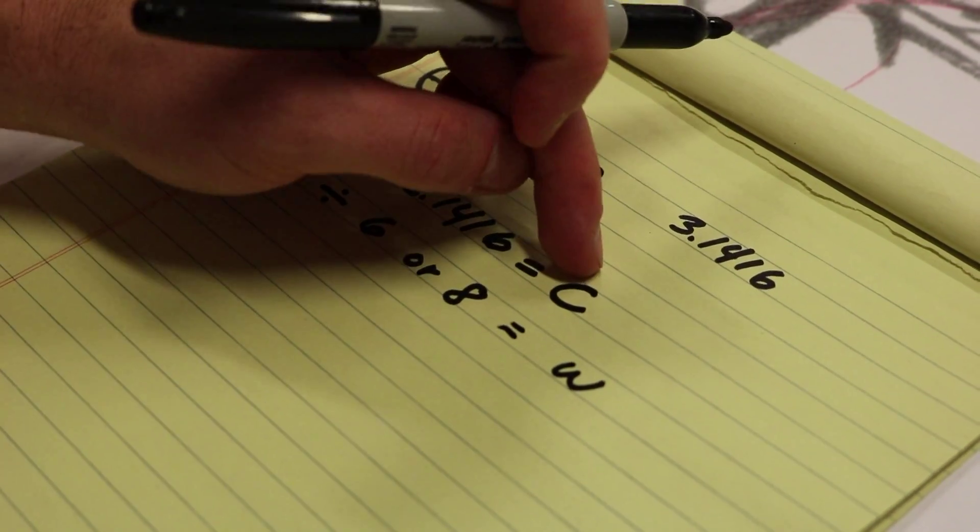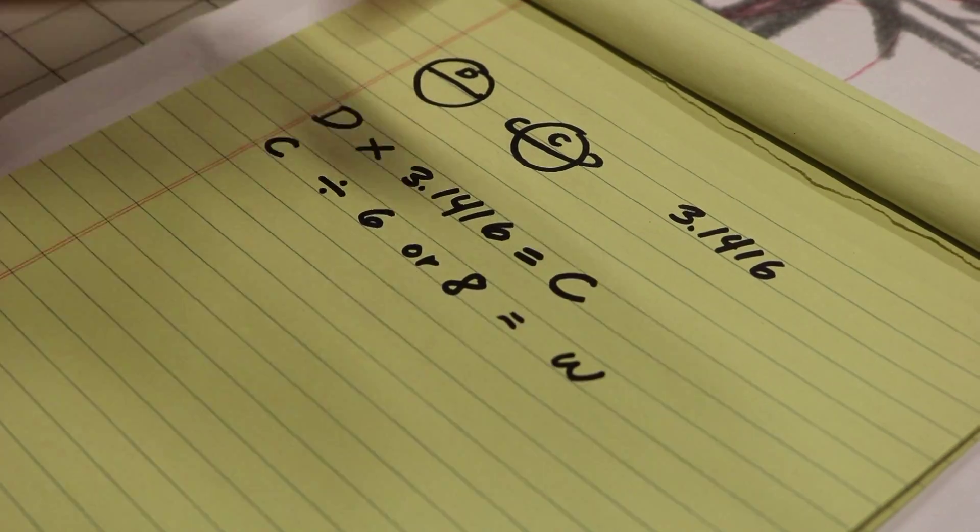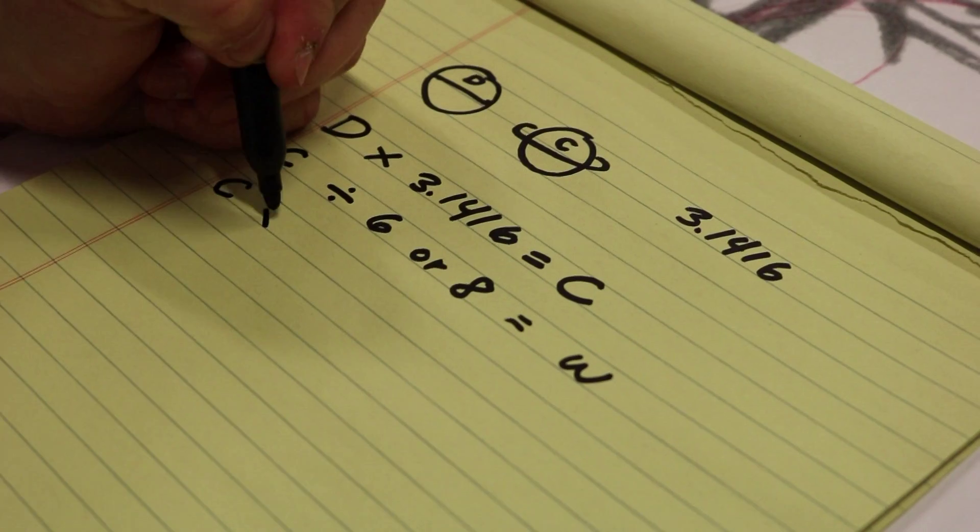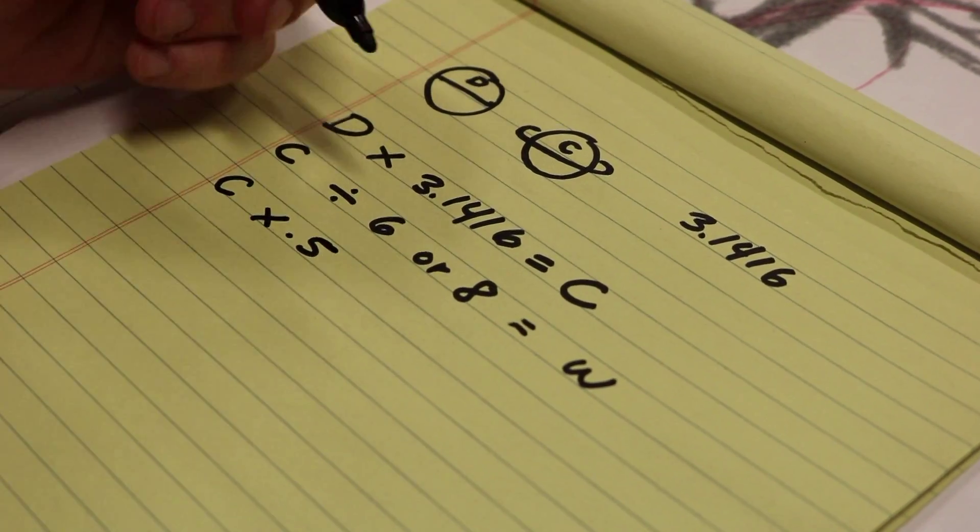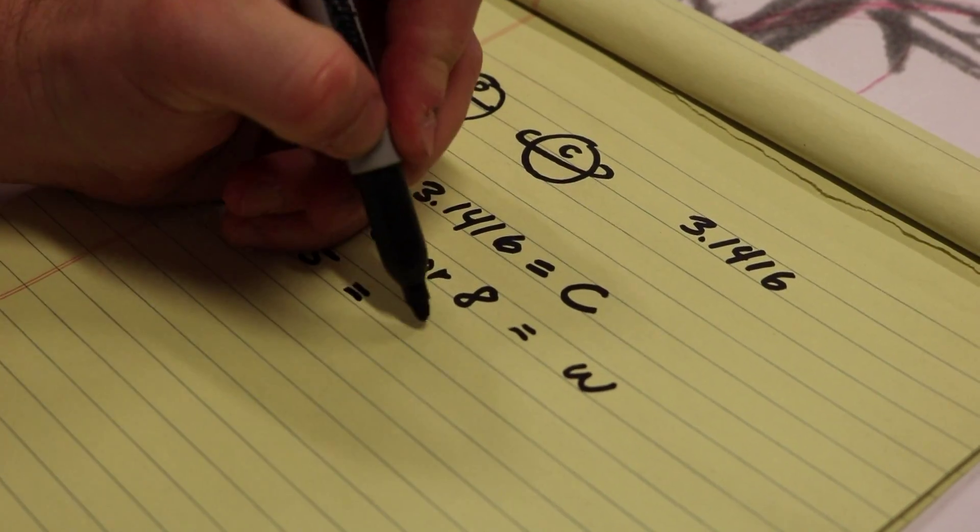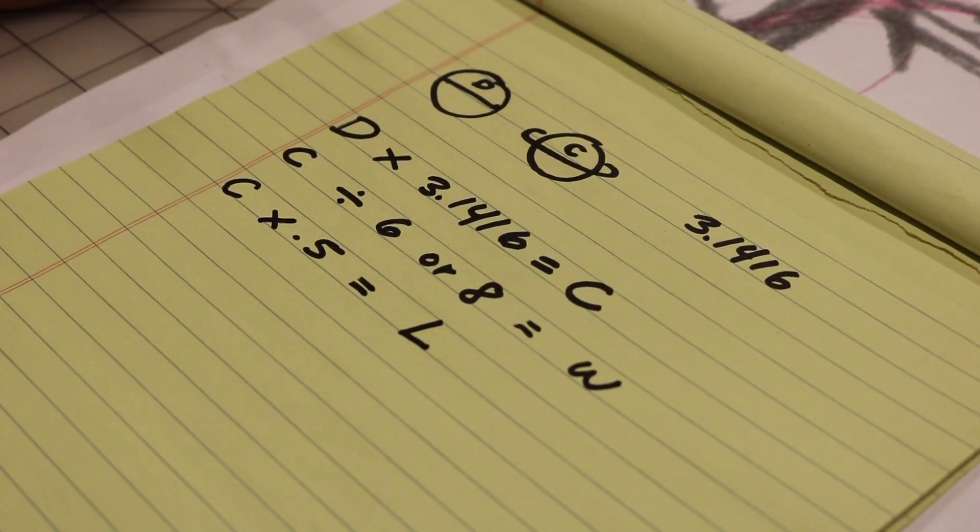Then we take our circumference and we cut it in half. So circumference and you want to cut it in half. And that is going to give us the length of each leaf.